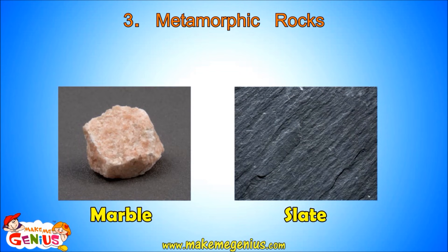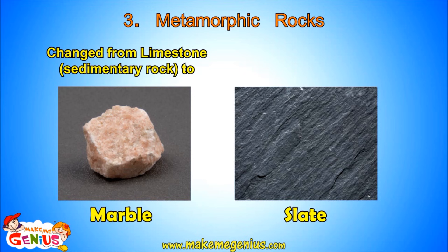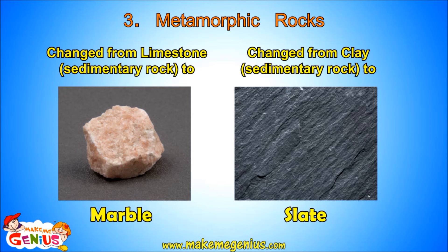Marble and slate are two types of metamorphic rocks. Marble is formed when limestone, which is a sedimentary rock, comes under a lot of pressure from above. Similarly, slate is formed when clay is changed by heat and pressure.